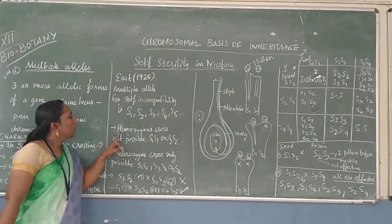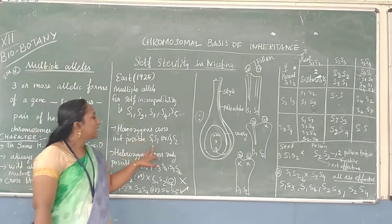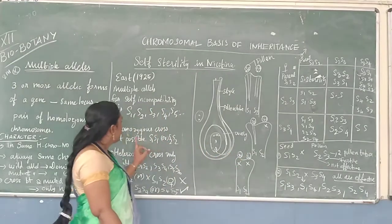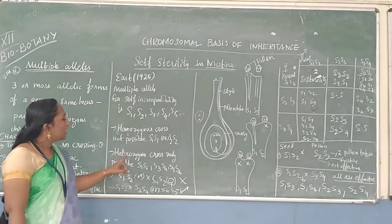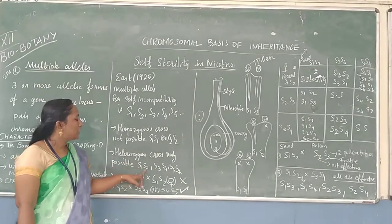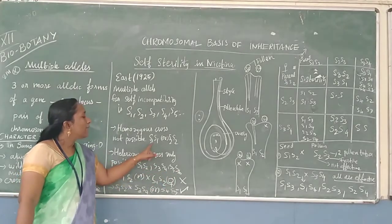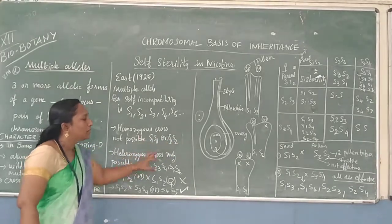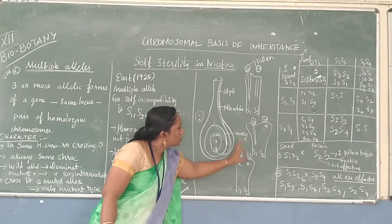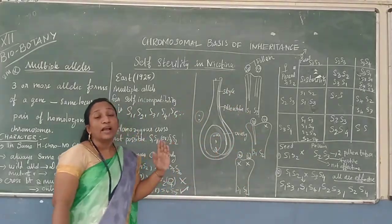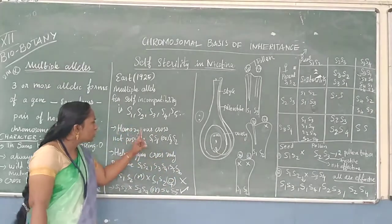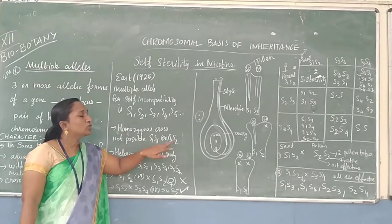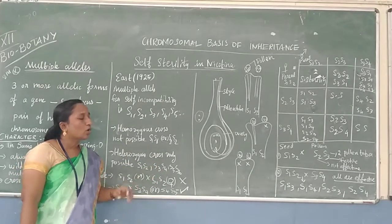An important point here is that homozygous crosses are not possible. S1S2 cannot cross with S1S2 — homozygous cross is not possible. Instead, only heterozygous crosses are possible: for example, S1S2 with S3S4, or S1S2 with S4S5. If S1S2 male crosses with S1S2 female — the same plant — no pollen tube is formed. It may be possible for S1S2 with S3S4 or S4S1. This is the nature of self-sterility.